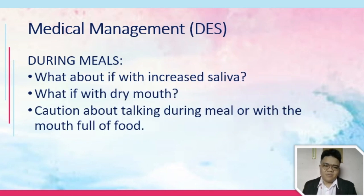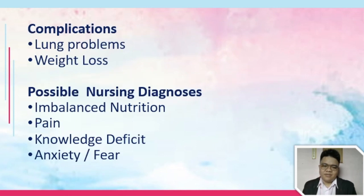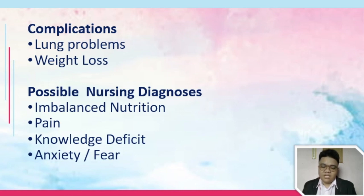Also consider what to do if there is increased saliva or dry mouth, and what cautions to give when talking while eating. Watch out for complications including lung problems and weight loss. Lung problems follow because of risk for aspiration. Weight loss is related to imbalanced nutrition, less than body requirements. Possible nursing diagnoses include: imbalanced nutrition less than body requirements related to structural problems of the esophagus or involuntary contractions, presence of pain, knowledge deficit, and anxiety or fear.